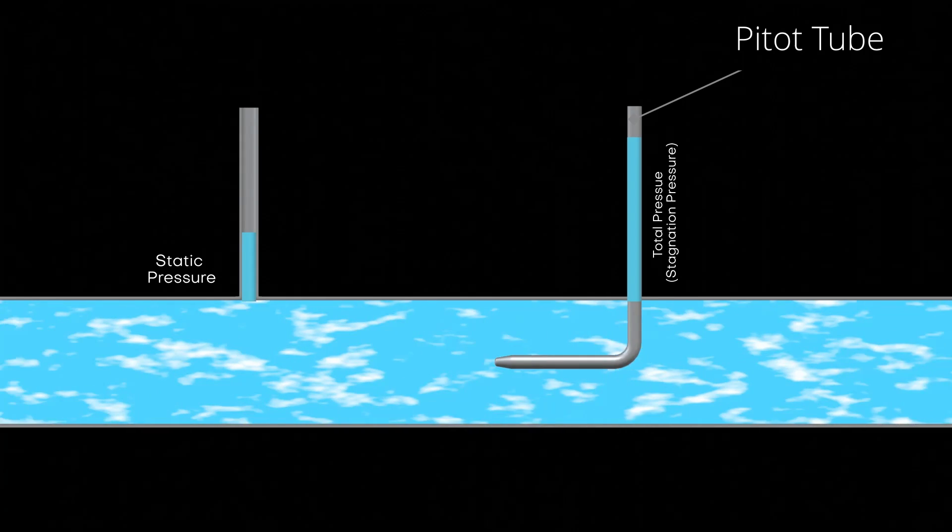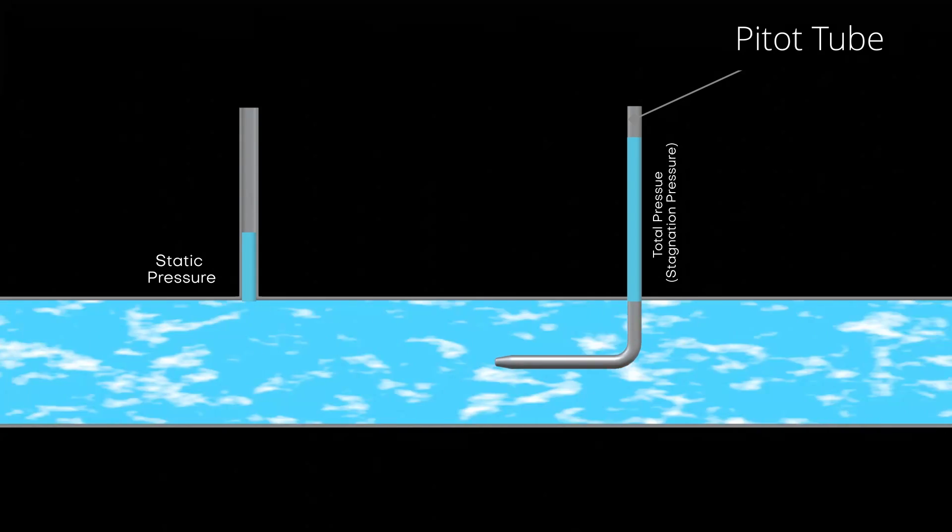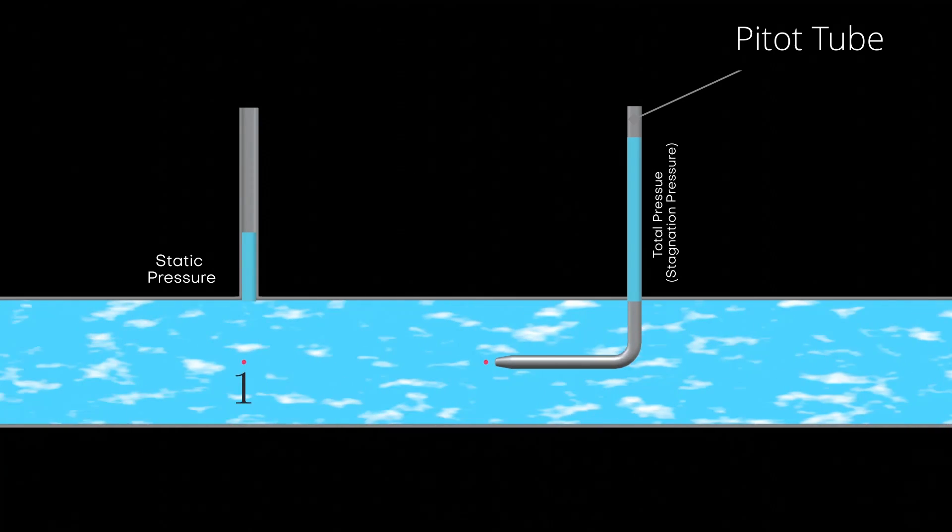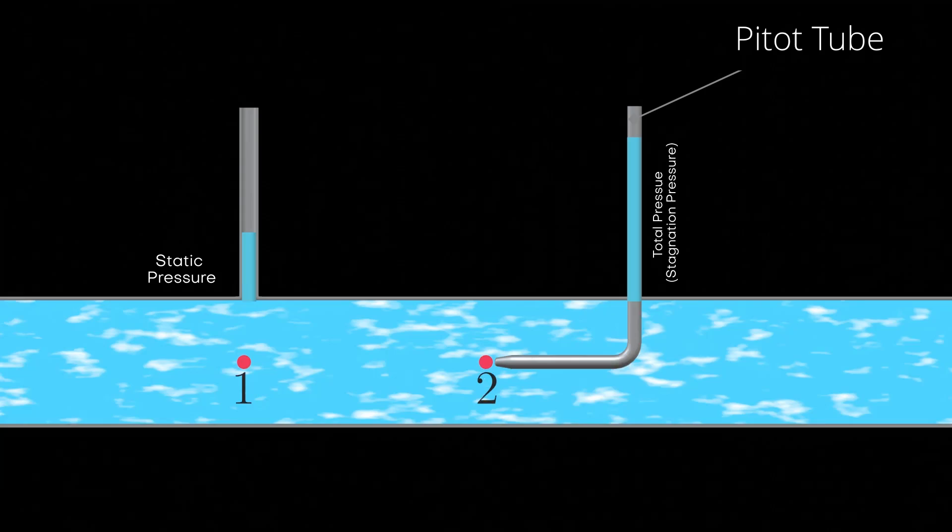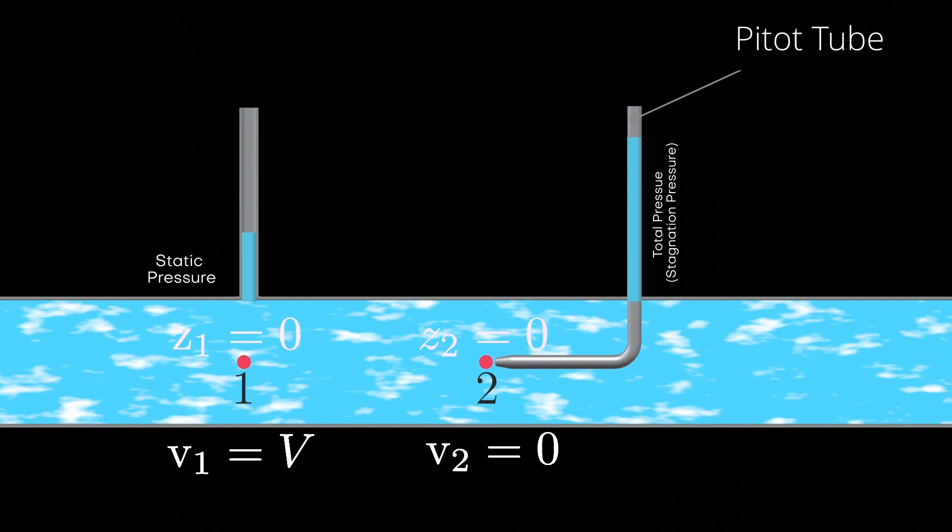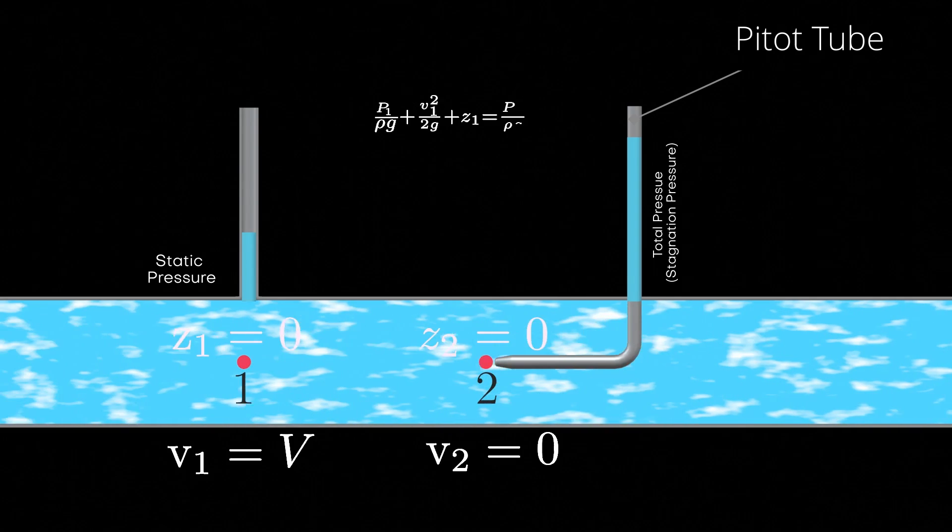The difference between the static pressure and total pressure gives the dynamic pressure. Now, let's consider two points, 1 and 2. As you can see on the screen, the velocity at point 1 is V and at point 2 is 0, and the elevation between point 1 and point 2 is also 0, so it cancels out.